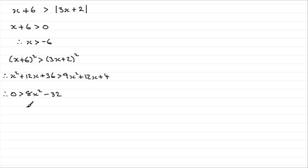And we can divide throughout by 8 here, so we might as well take that opportunity, and we get 0 is greater than x squared minus 4. And for this quadratic inequality, I think it would be good just to turn this around. 0 is greater than x squared minus 4, so therefore x squared minus 4 must be less than 0.